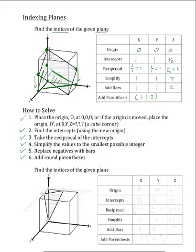Now we can solve for the bottom plane. For this plane, we do not have to translate it like we did to the plane above, but it is still a fairly challenging plane because most of the steps are involved. Just like usual, we will choose our origin. We will pick the cube corner that is closest to the plane, and that will be right here at 0,0,1. To go along with this new origin, we will have a new set of axes: an x-prime axis, a y-prime axis, and a new z-prime axis.